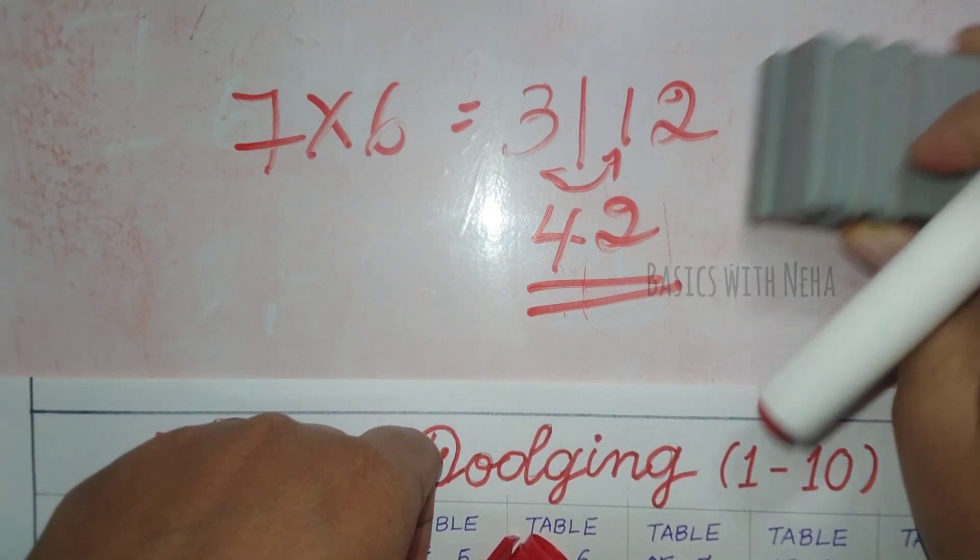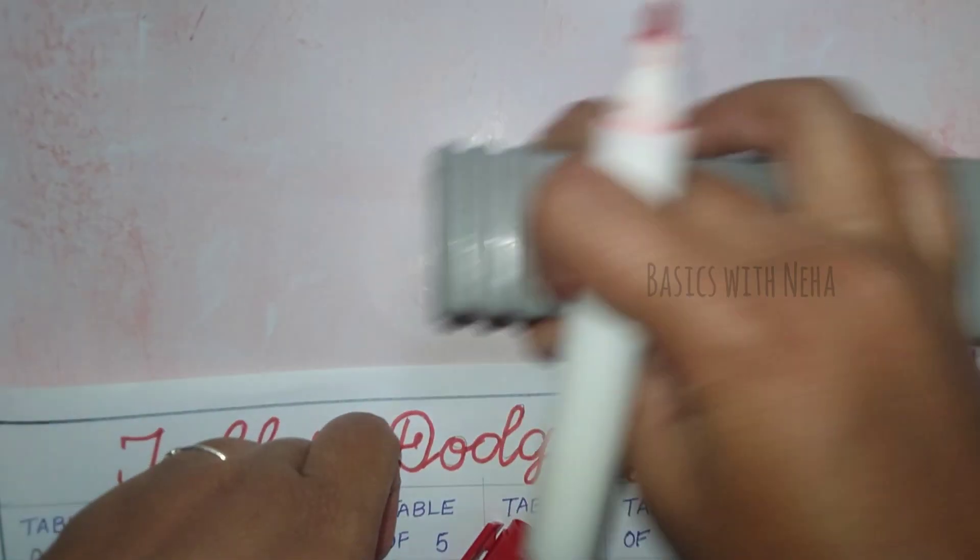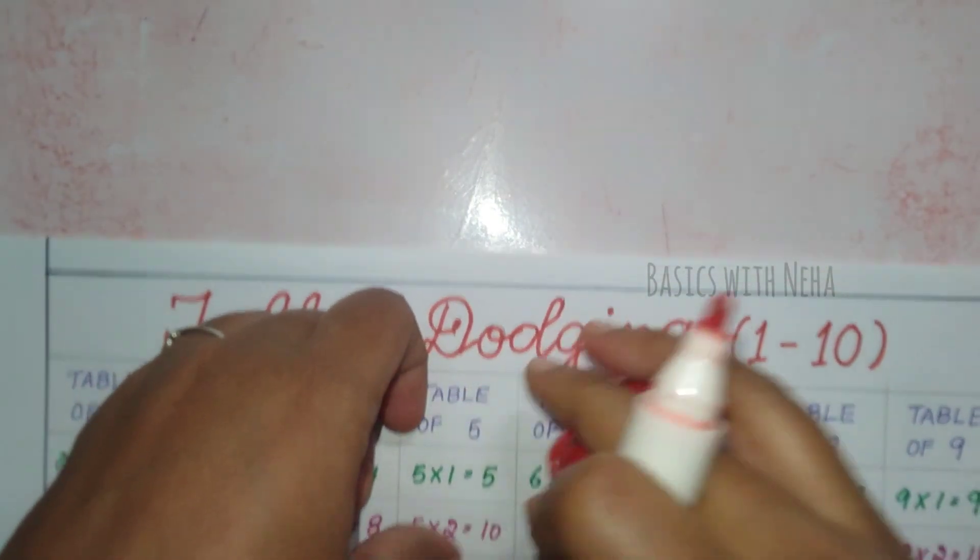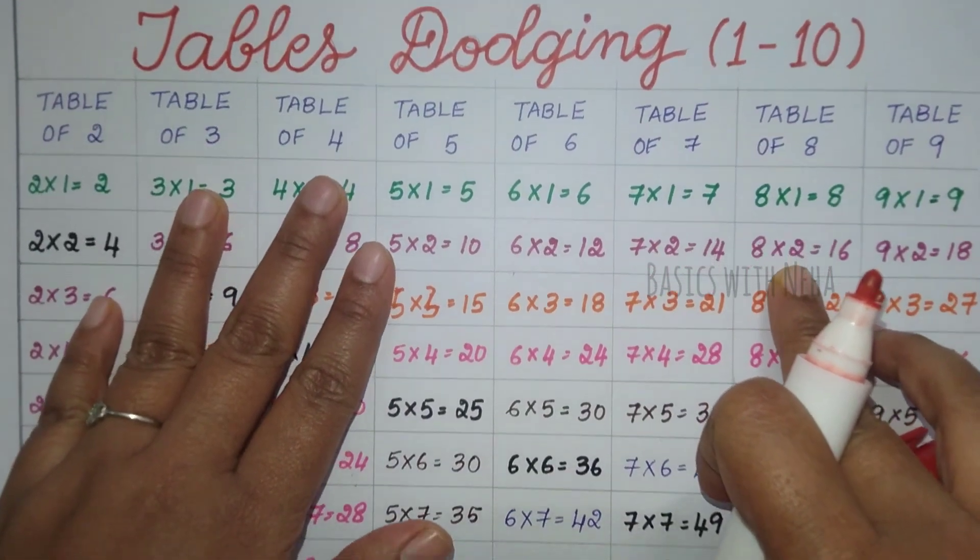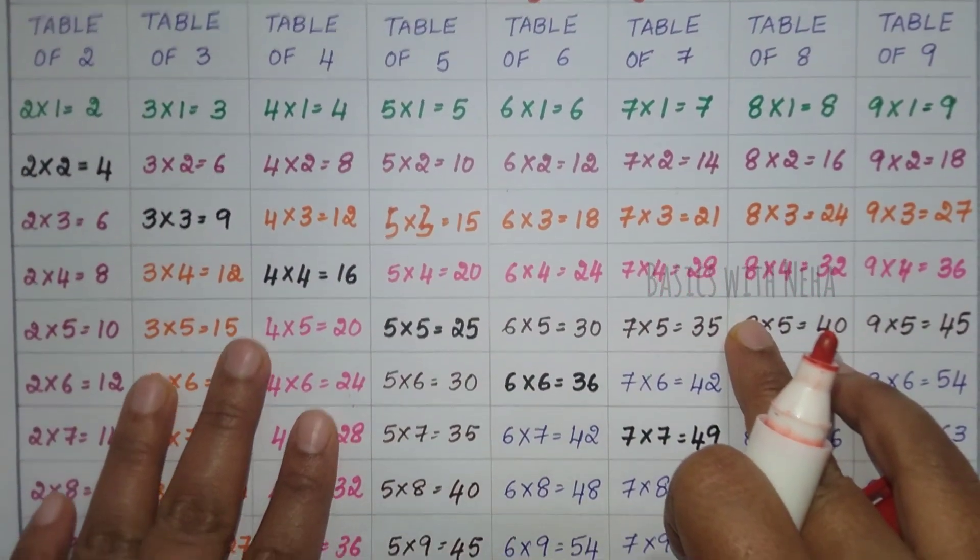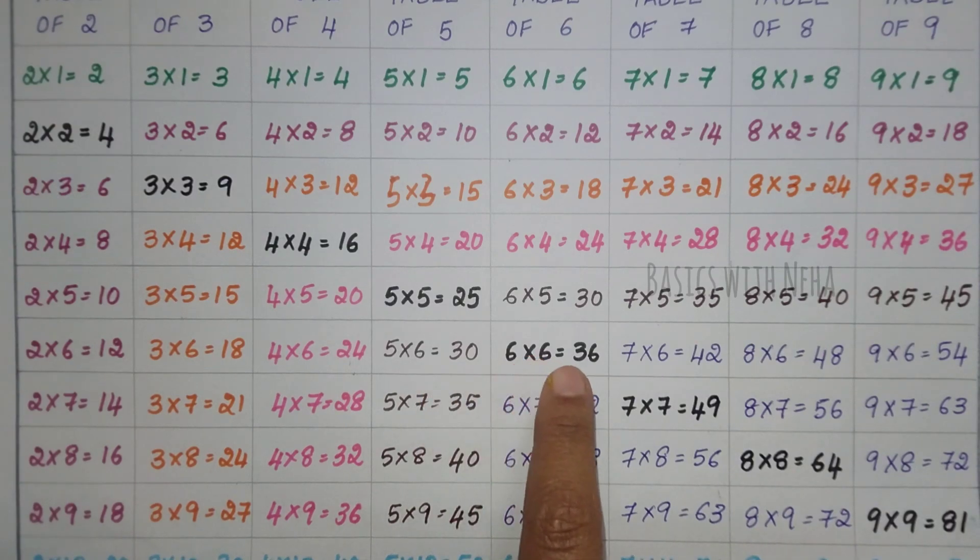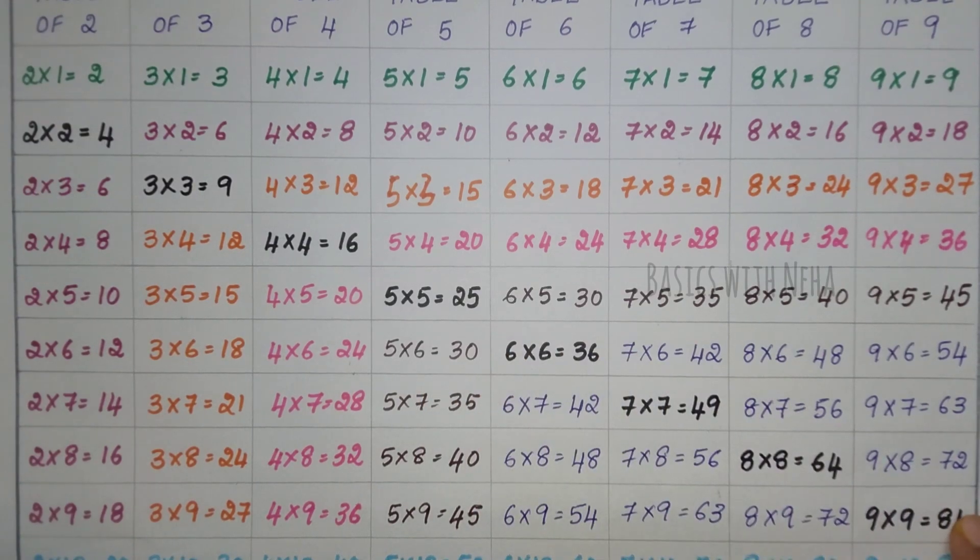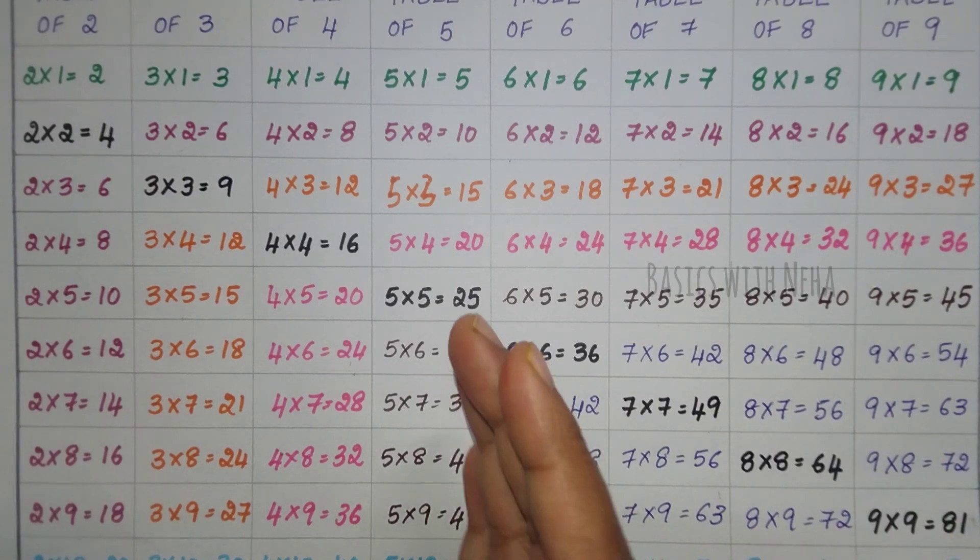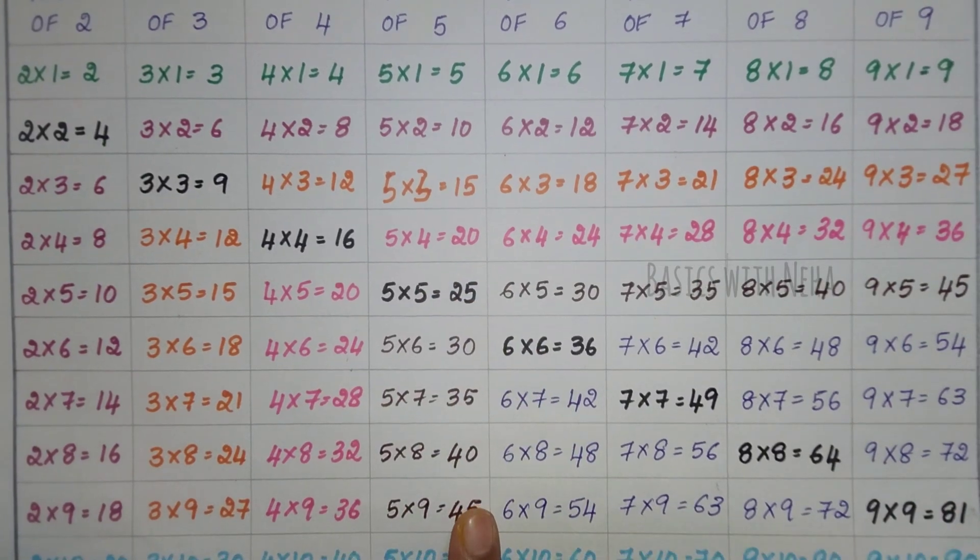This is how we do the dodging of the table. This is especially for kids who are struggling to learn tables. This would be an easy method for them to understand. So I hope this video was helpful.